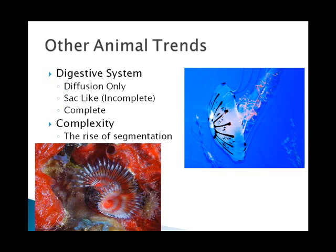Some other animal trends include the development of a digestive system. The earliest or most primitive types of animals only digest by diffusion, either across their body wall or inside pores. Some animals like the Cnidaria, the jellyfish, have a sac-like or incomplete digestion — they take in food through the mouth and expel waste through the same orifice. A complete digestive system means food goes one way: you have a mouth and an anus, which is a bit more efficient.